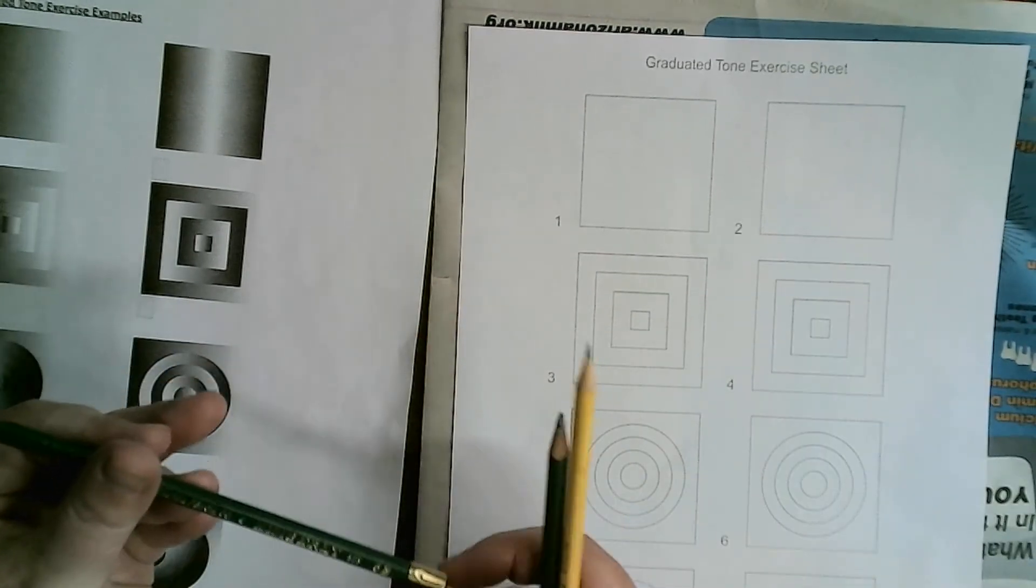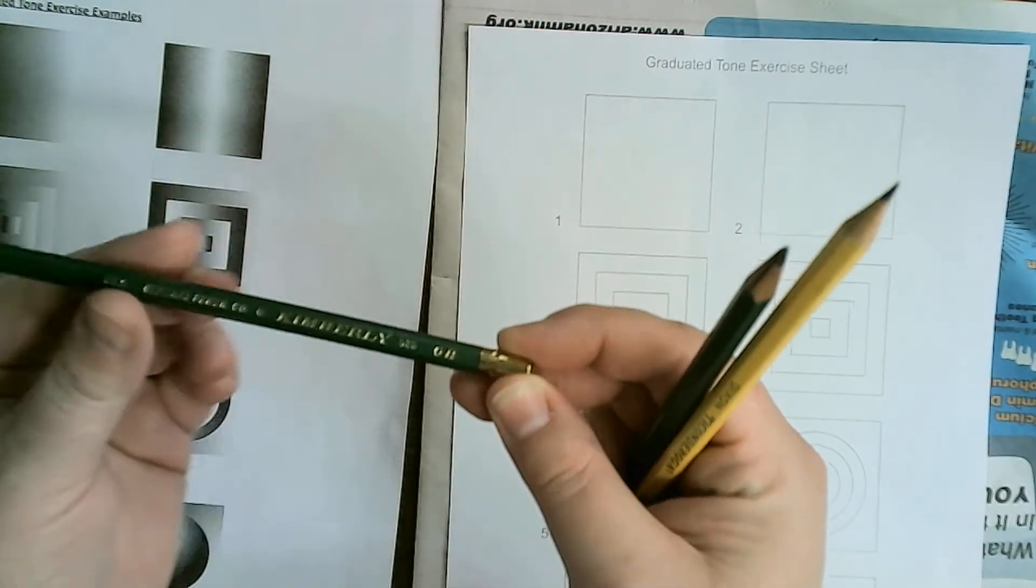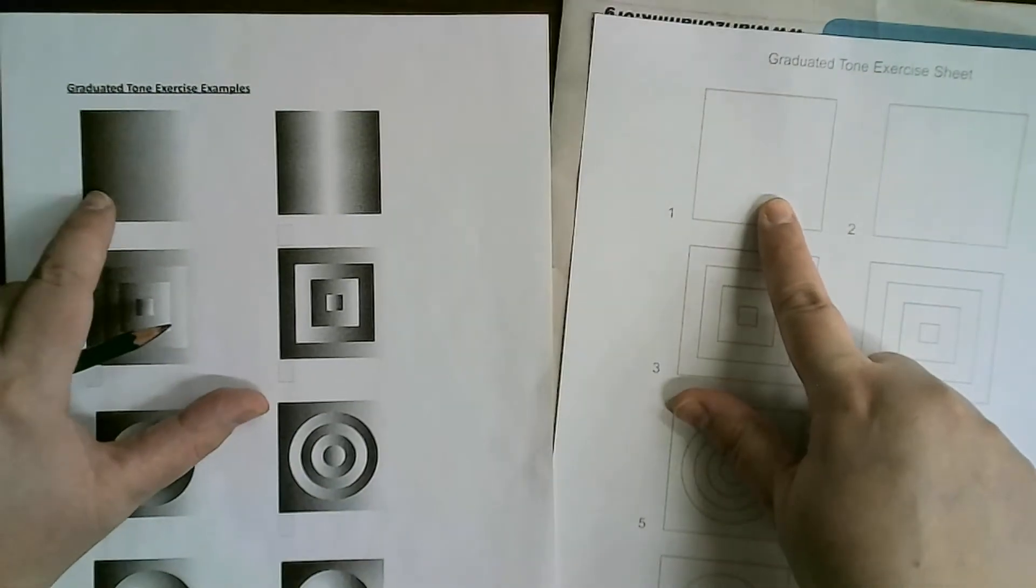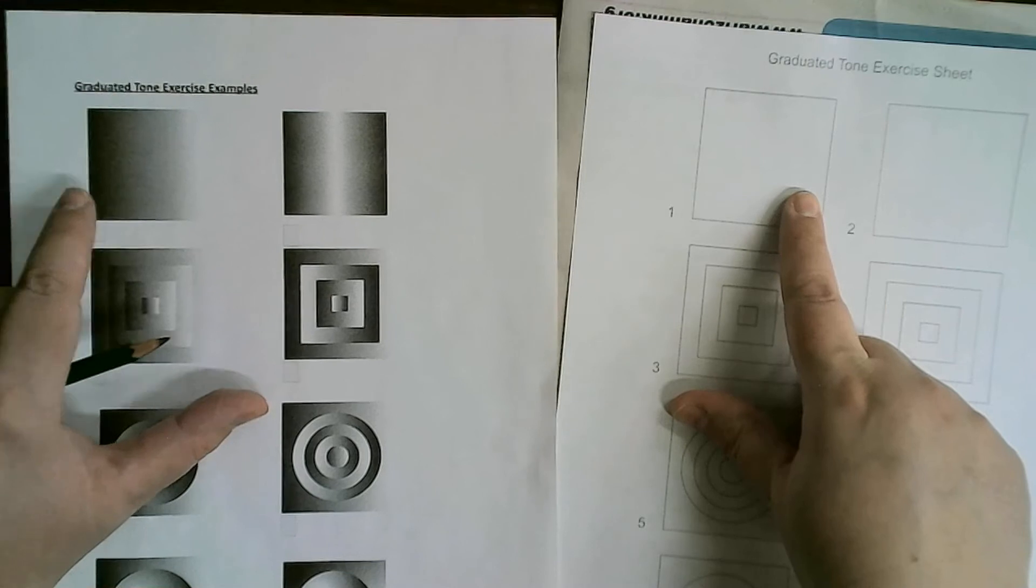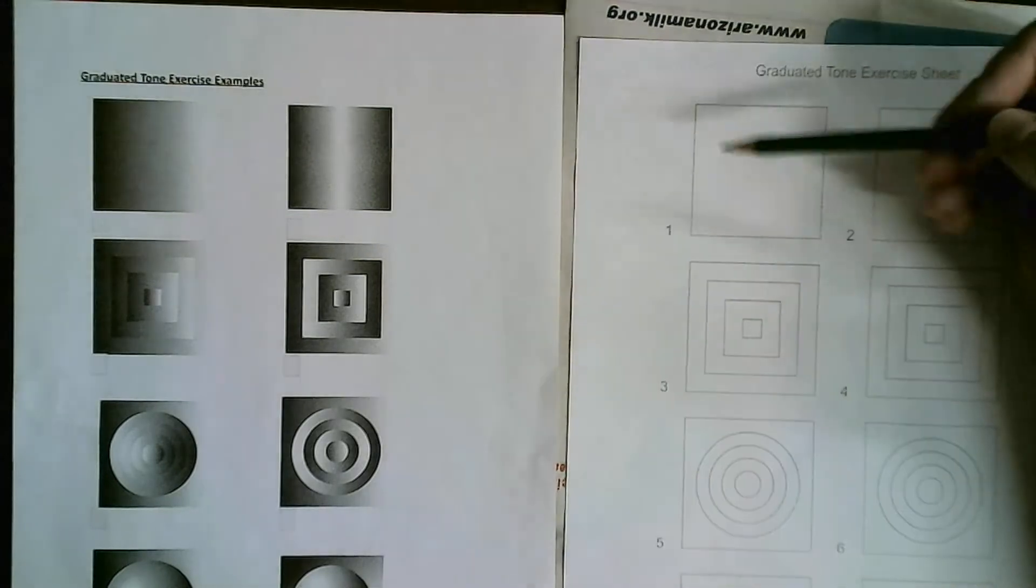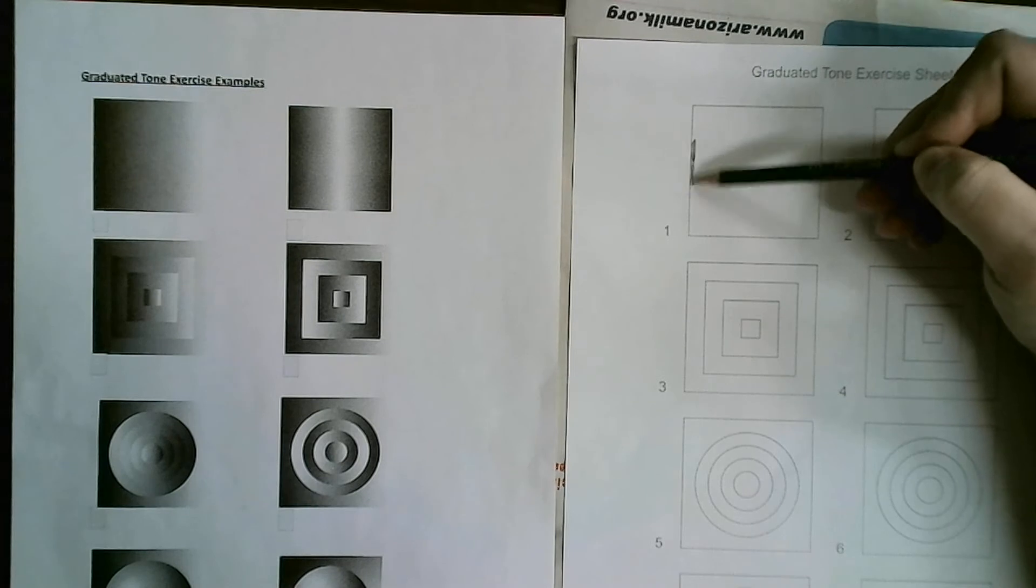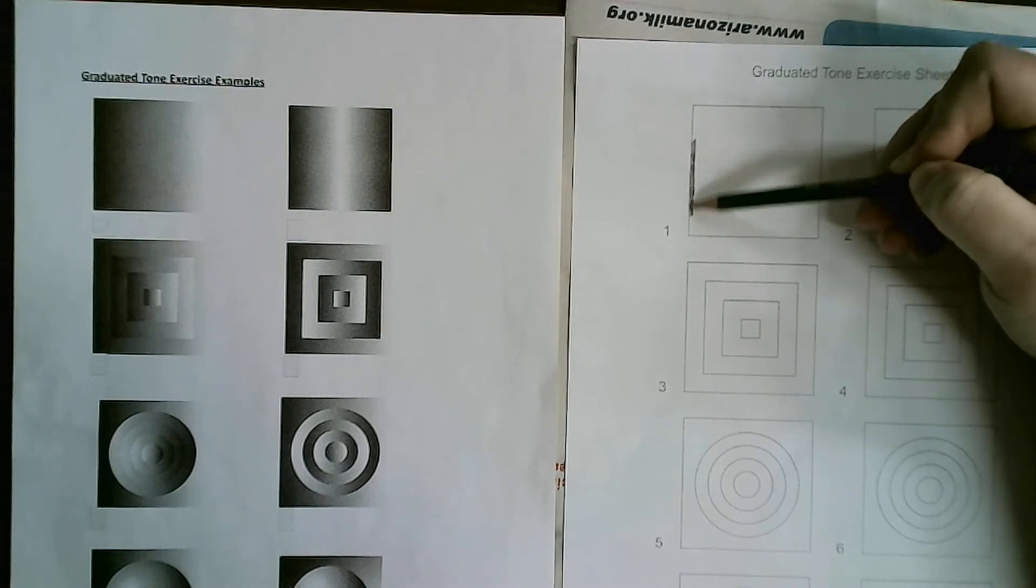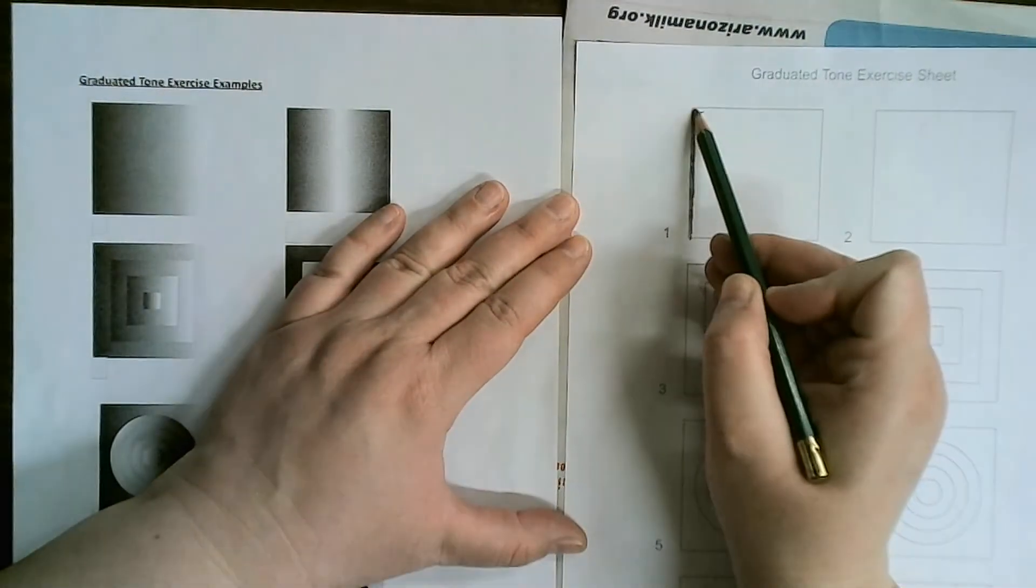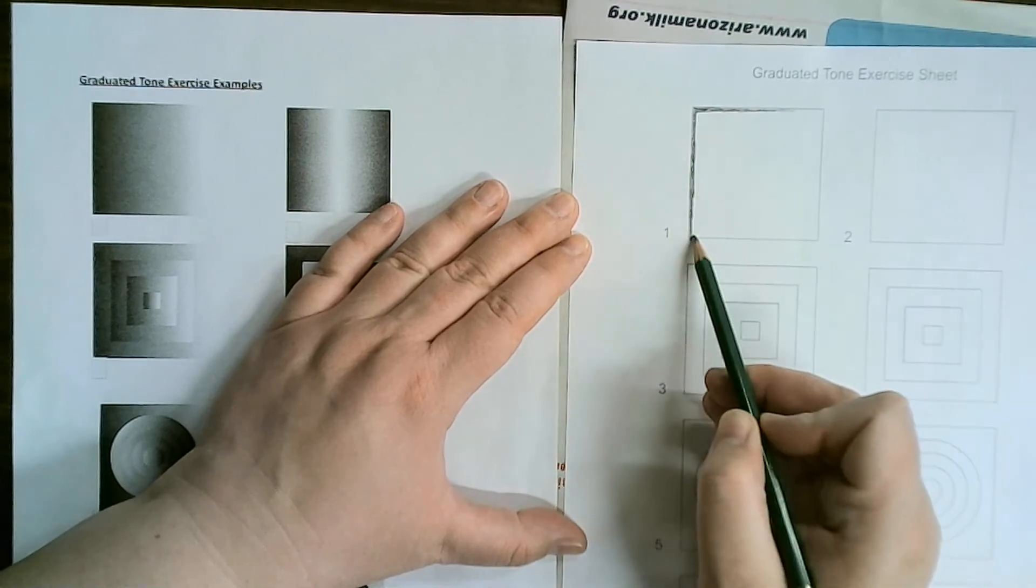We are going to start off with 6B, which is a darker pencil. For this box, we want to have it really dark fading out into the white of the paper. This is very similar to what you did for cubism. I'm going to start out with good craftsmanship and then I'm going to kind of fade out as it's supposed to fade out.